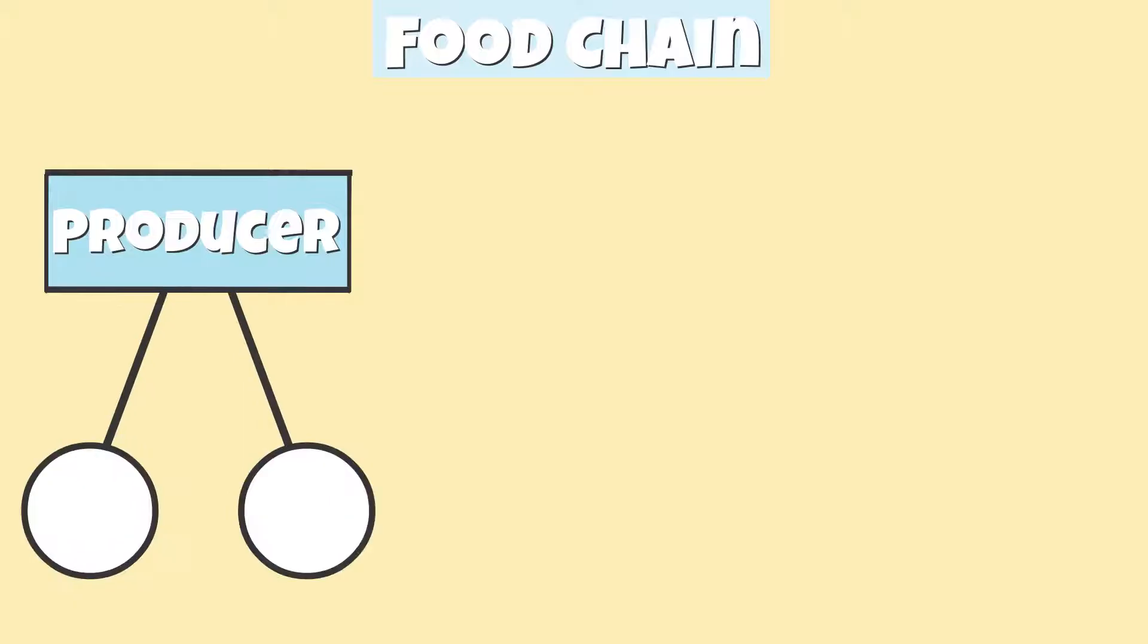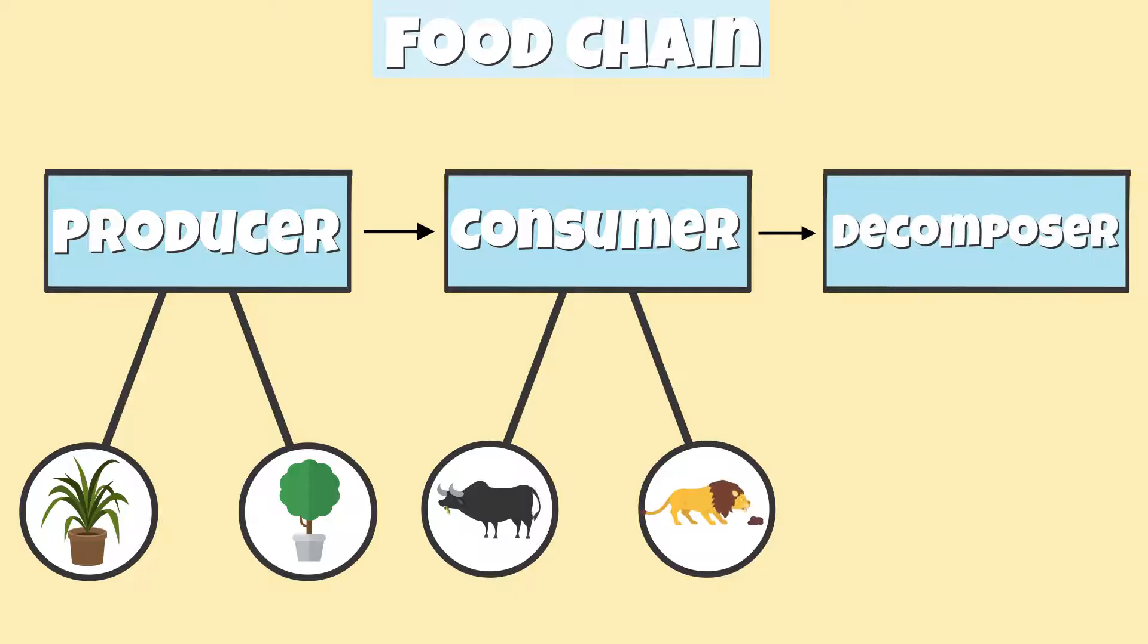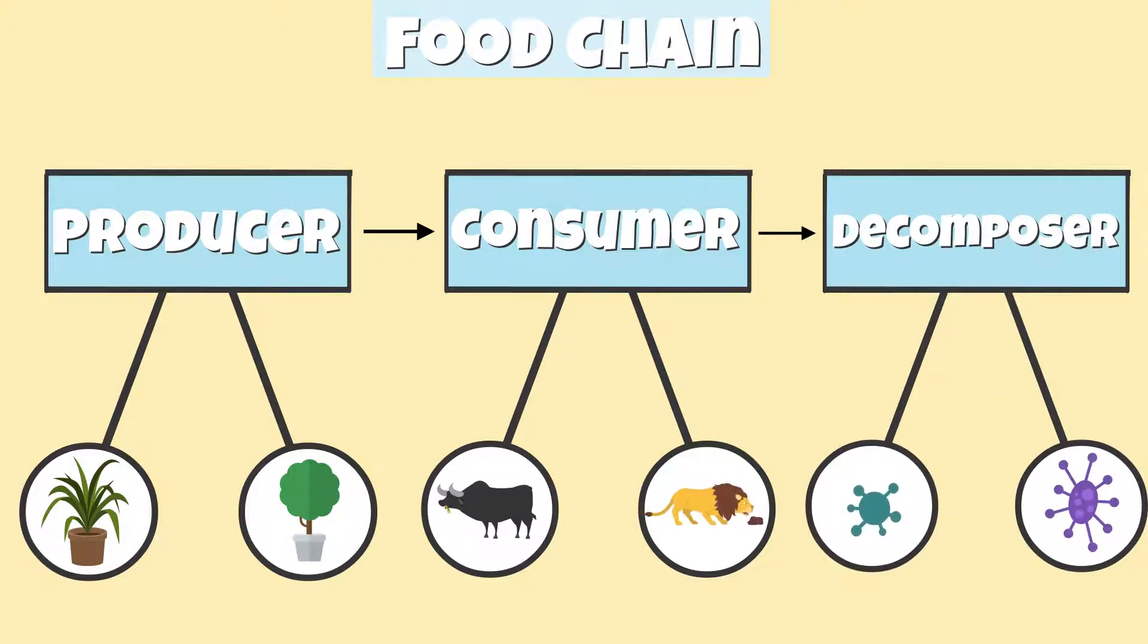In a food chain, you will find a flow of energy from a producer, a living organism that creates its own food from sunlight, to a consumer, an organism that eats and depends on other organisms for survival, to a decomposer, which are tiny organisms that break up dead animals and plants for food. Energy can also flow directly from a producer to a decomposer.